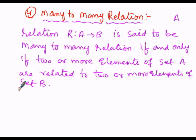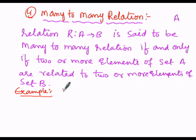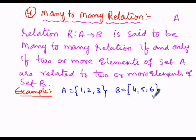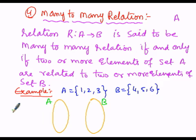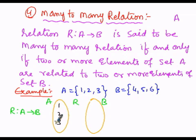Let us illustrate with an example. Two or more than two elements of set A must have a relationship with two or more than two elements of set B. We consider set A with elements 1, 2, 3 and set B with elements 4, 5, 6. The first set is A and the second set is B, and the relation R is from A into B.